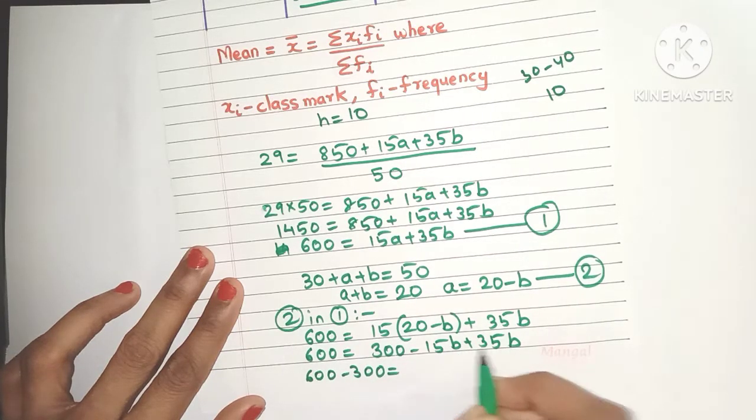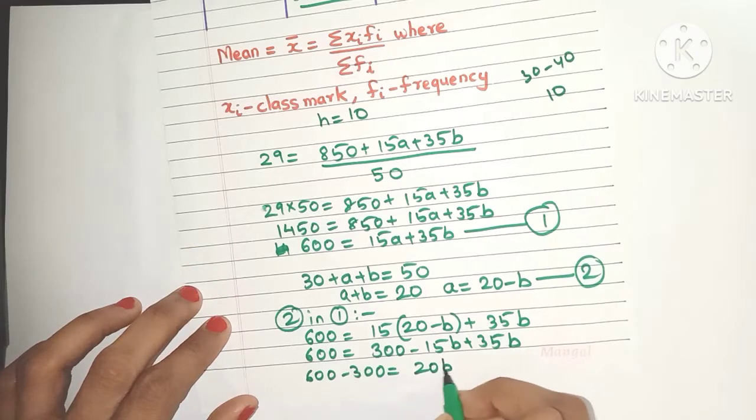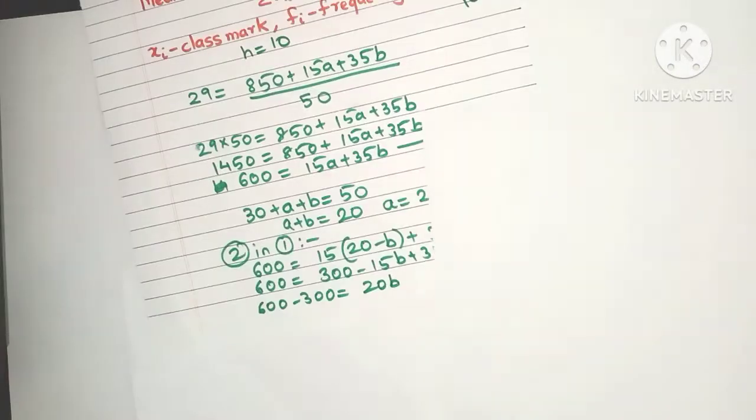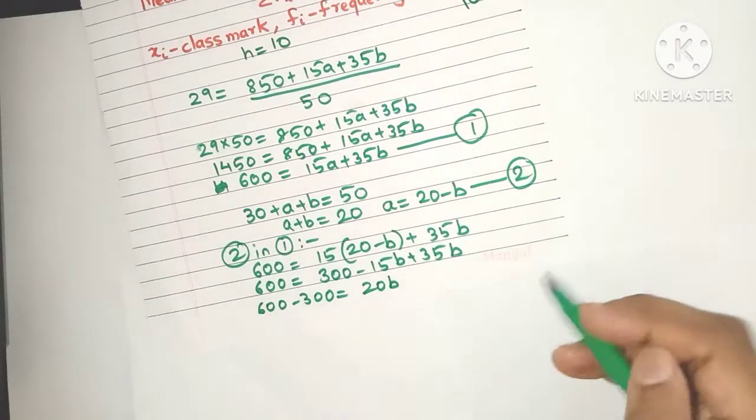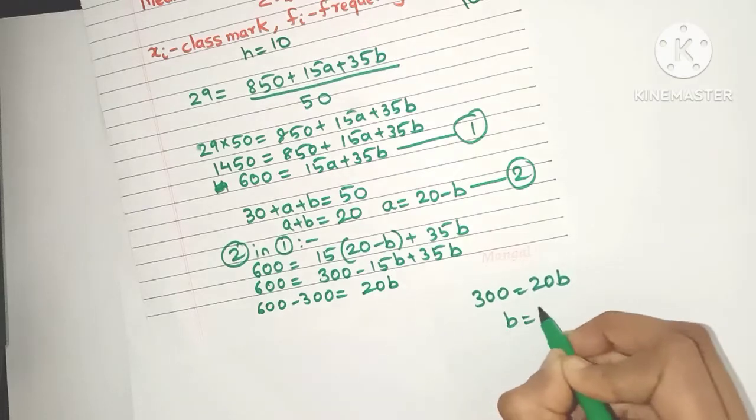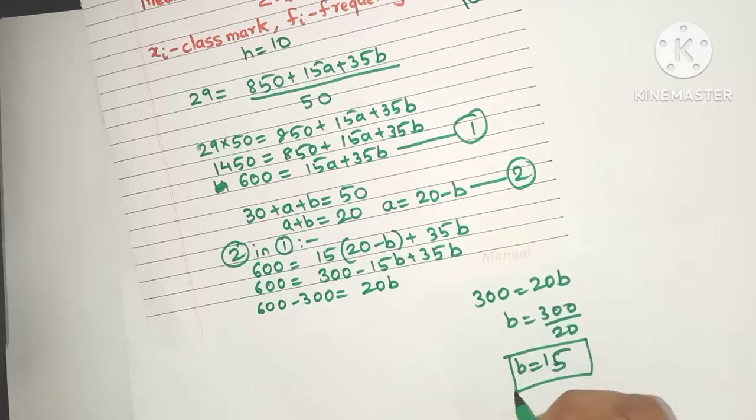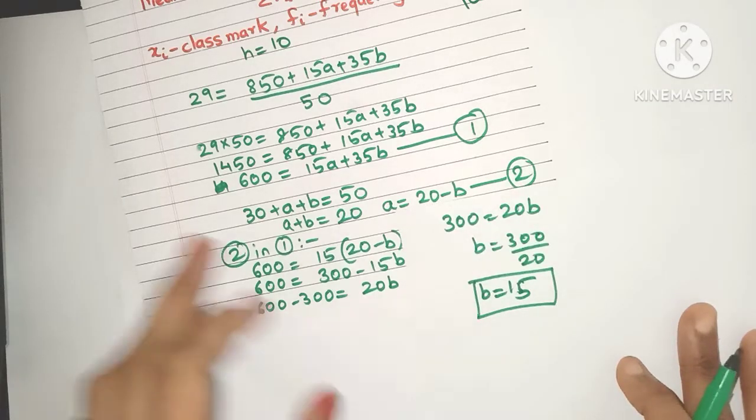These are like terms, so 35b minus 15b gives 20b. Now 600 minus 300 is 300 equals 20b, which means b is 15. So we easily got the value of b.